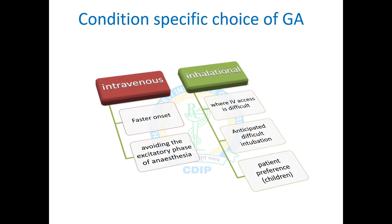There are conditions based on which we choose a general anaesthetic agent. If we want faster onset of action and to avoid time spent in stage 2 — the excitatory phase — we can opt for intravenous anaesthetics. Inhalational therapy is generally employed where intravenous access is difficult, when difficulty in intubation is anticipated, or when the patients are children.